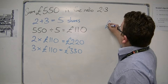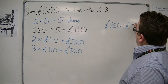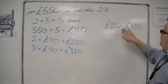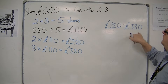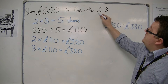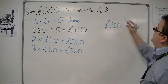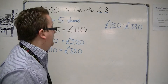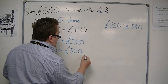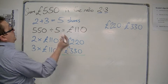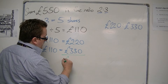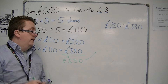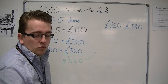You can write the shares in an equivalent ratio — person A lines up with the two portions giving £220, and £330 lines up with the three portions for person B. A nice check at this stage is to make sure that the two numbers you get add up to what you started with — £550. If they don't, then you must have gone wrong somewhere.